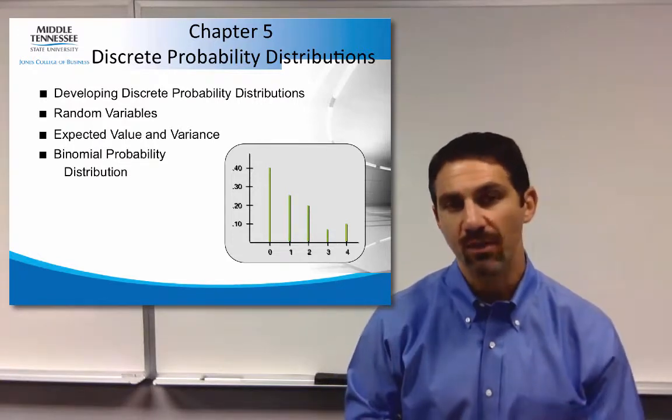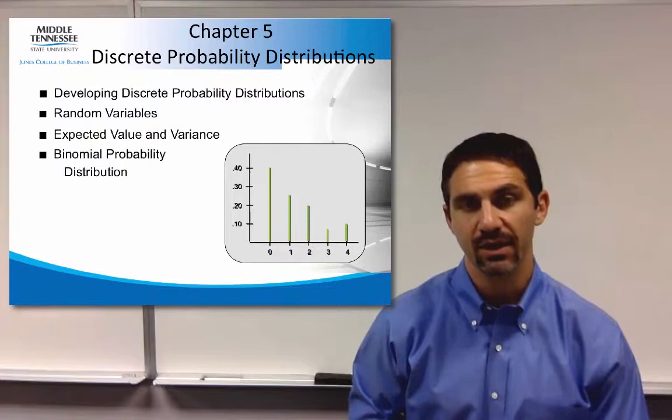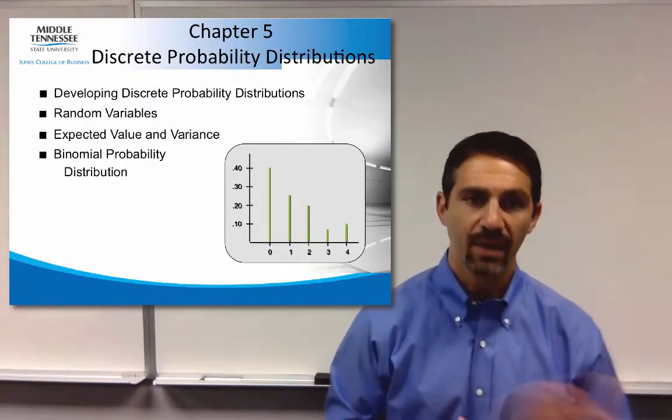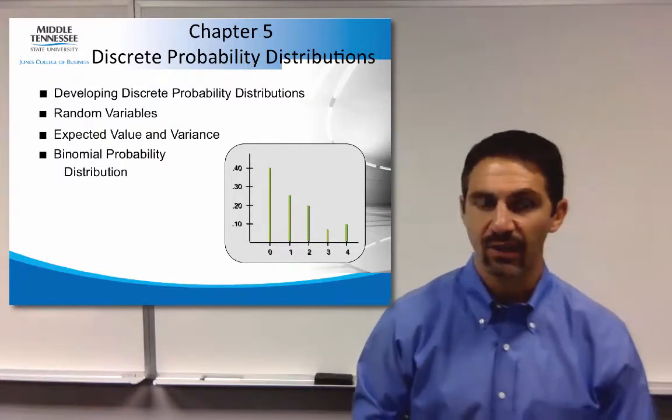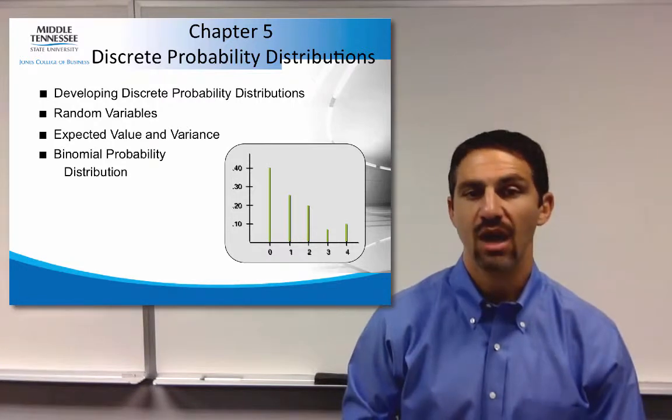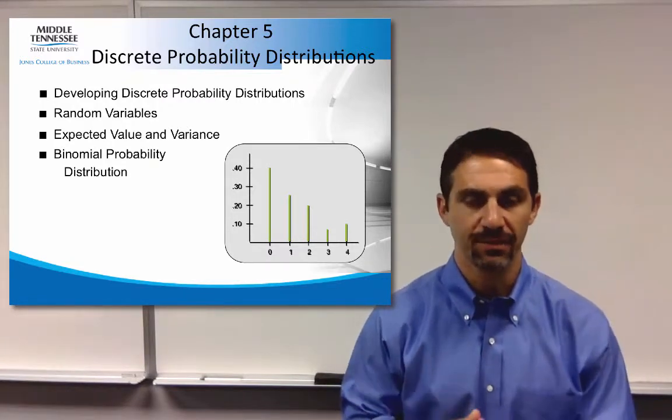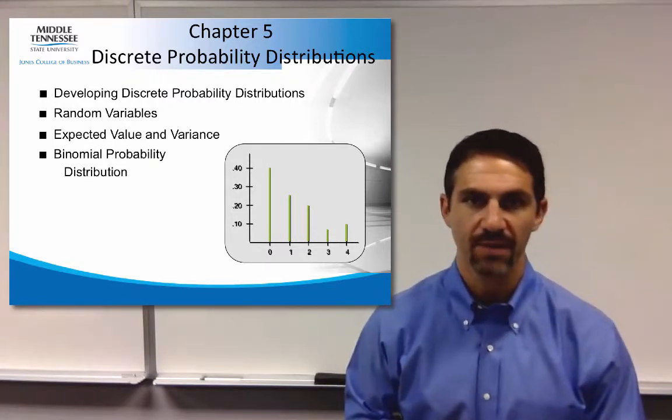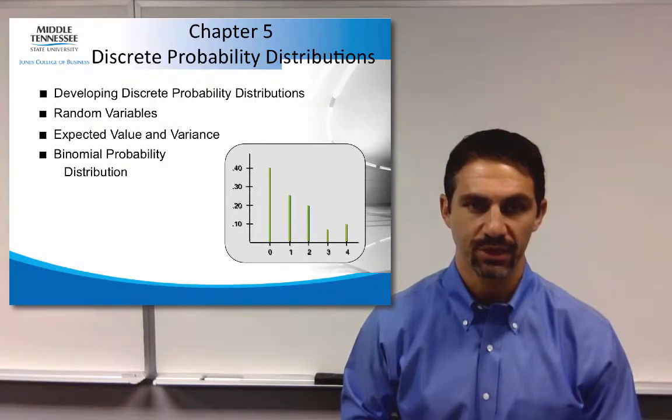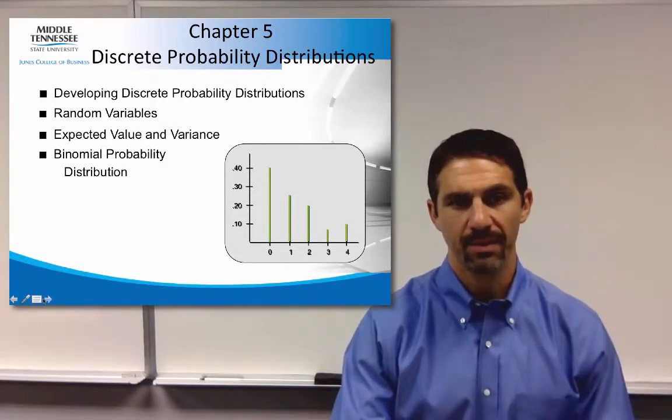What we will do is talk about random variables and discrete random variables here for this chapter, talk about how to calculate the expected value and variance, and then we will talk about binomial distribution. We will not talk about any other type of discrete probability distributions, only binomial probability.